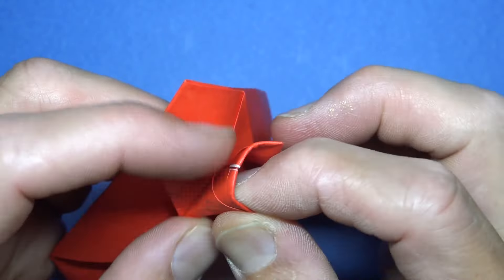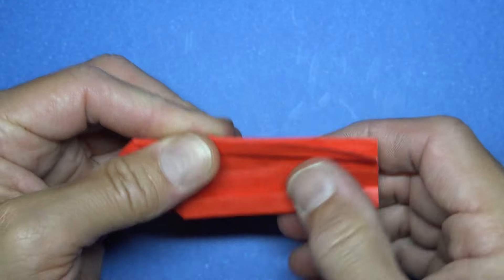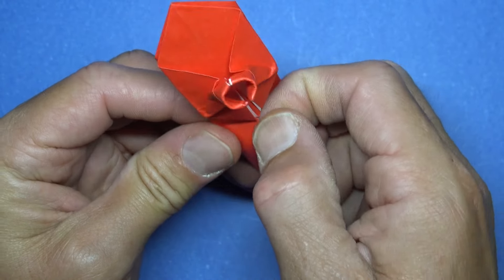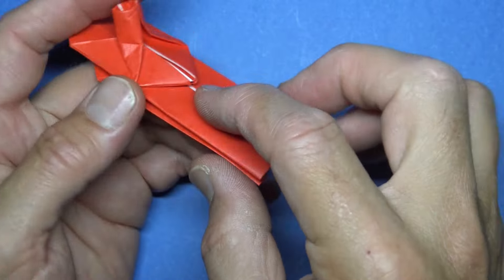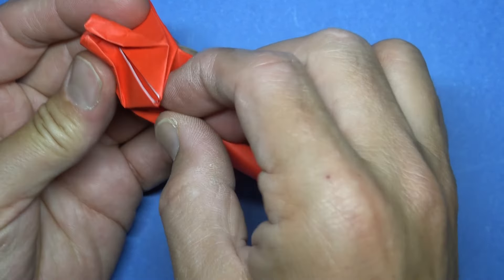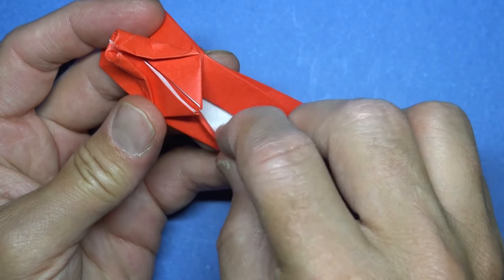And fold this edge to the crease. And repeat. And just to give it a little bit better jump mechanism, fold this flap to the edge. And repeat. So we're just making it thicker. And turn over.